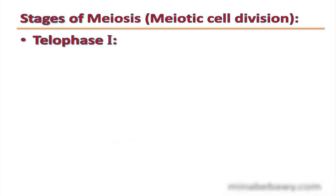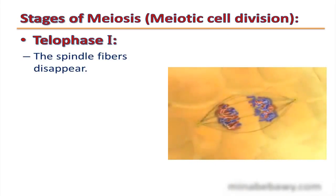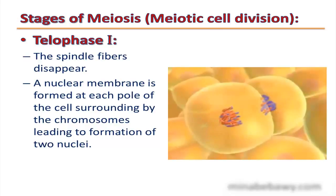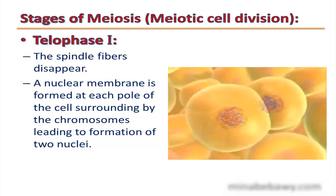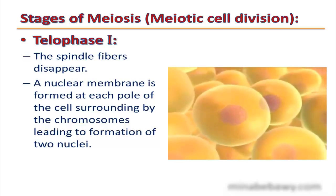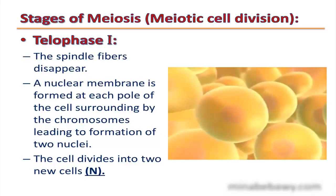The final phase of meiosis 1 is telophase 1. The spindle fibers disappear. A nuclear membrane is formed at each pole of the cell, surrounding the chromosomes, leading to the formation of two nuclei. The cell then divides into two new cells, each containing half the number of chromosomes, or haploid (N).